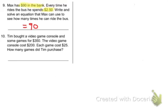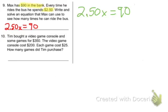Every time he rides the bus, it's $2.50. So if he rides it one time it's $2.50, two times would be $5. So every time you have to take away $2.50. So there's our equation: $2.50X equals 90. And now you need to solve it.